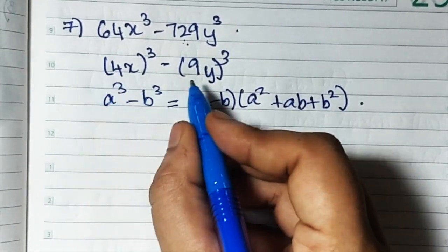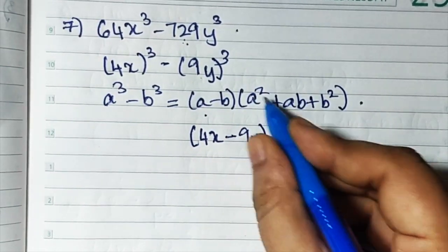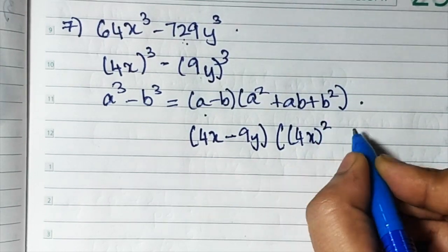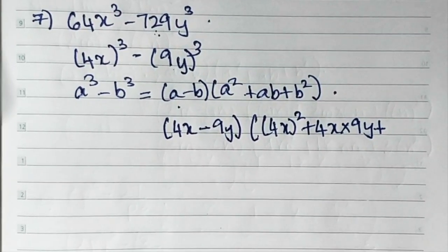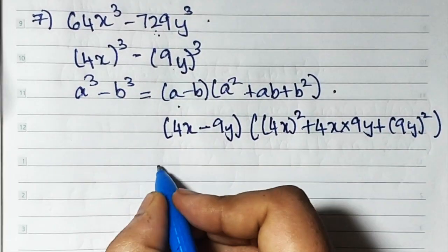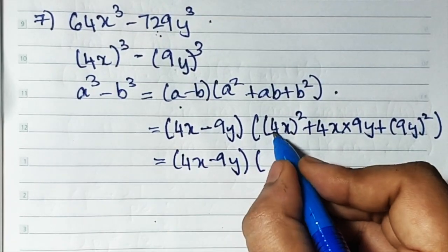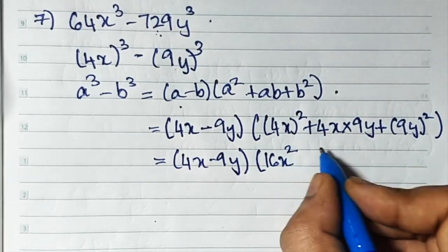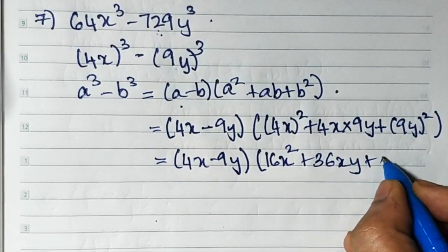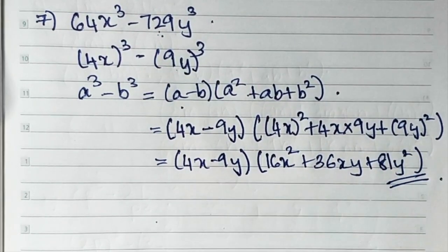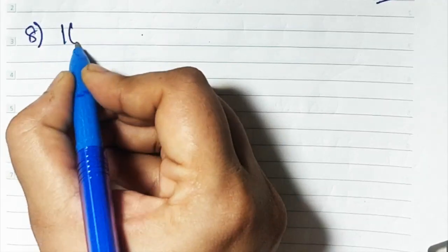Here a is 4x and b is 9y. Substituting: 4x minus 9y, times (4x) square plus 4x into 9y plus (9y) square. Solving: square of 4 is 16, so 16x square, plus 4 times 9 is 36xy, plus square of 9 is 81y square. That's sum number 7: (4x - 9y)(16x² + 36xy + 81y²).